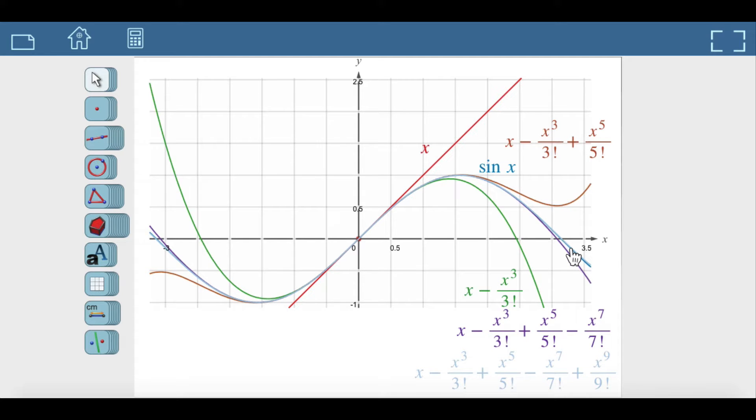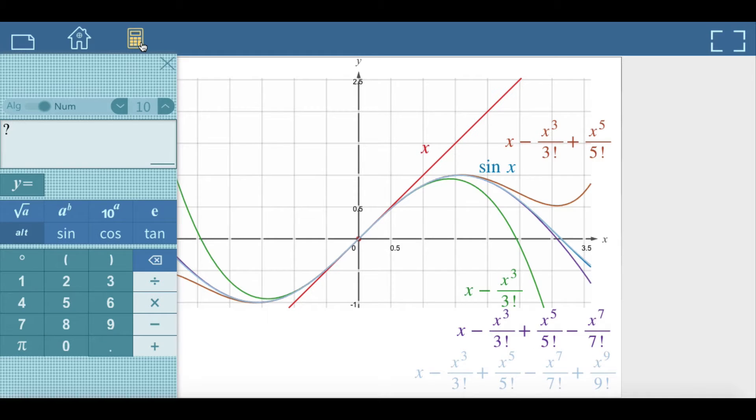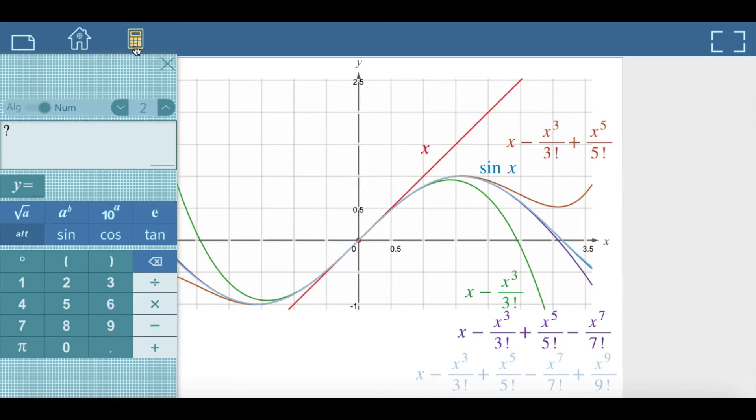Therefore, the error in approximating by a Taylor polynomial is no more than the absolute value of the difference between itself and the next Taylor polynomial.